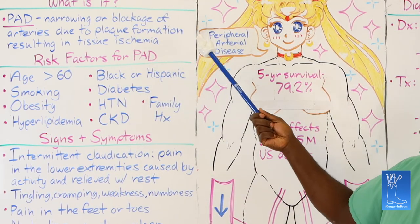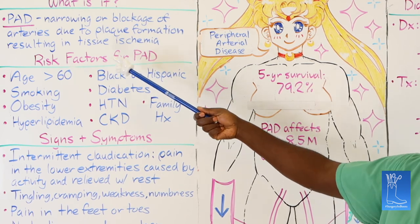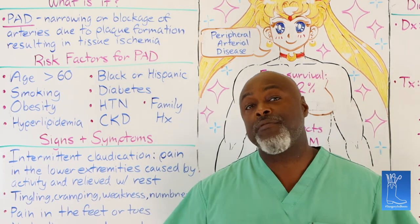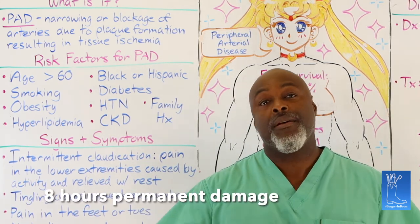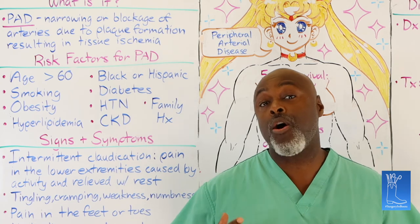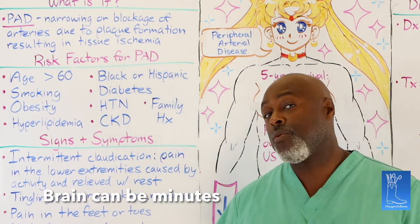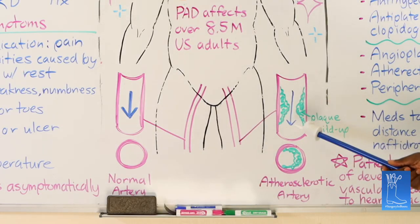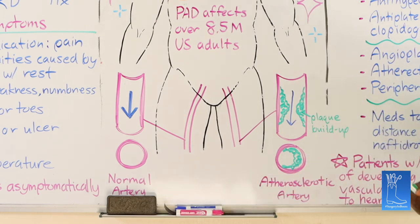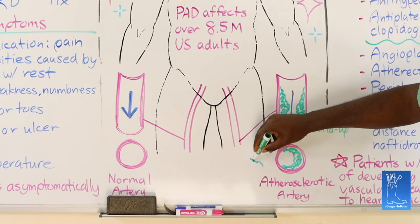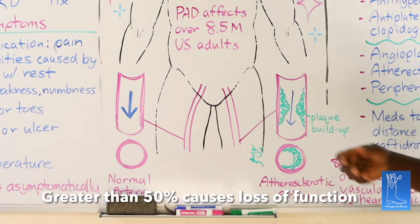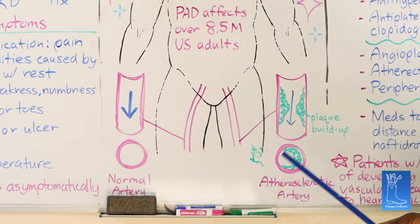PAD is the narrowing or blockage of arteries due to plaque formation, resulting in tissue ischemia. If you don't have blood flow to something for longer than eight hours, you run into serious problems. To review the anatomy: a normal artery versus one with plaque buildup on the sides — the magic number is greater than 50% stenosis, whether it's in your arms or legs, anywhere. That's when symptoms start.